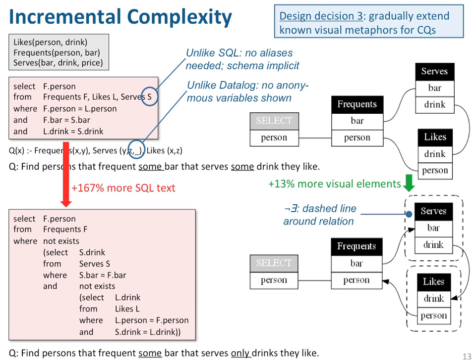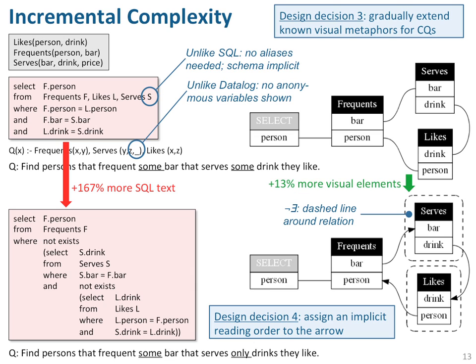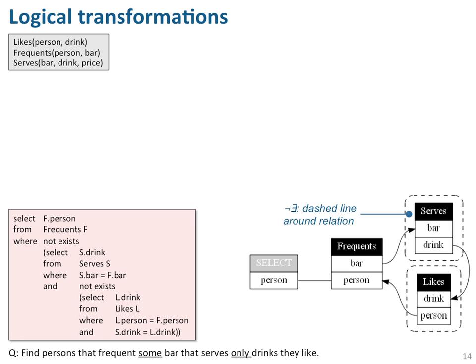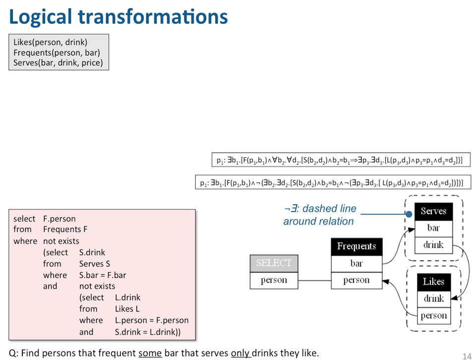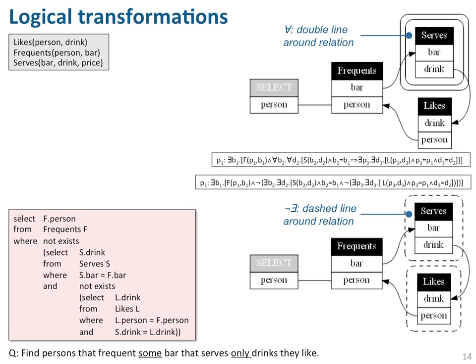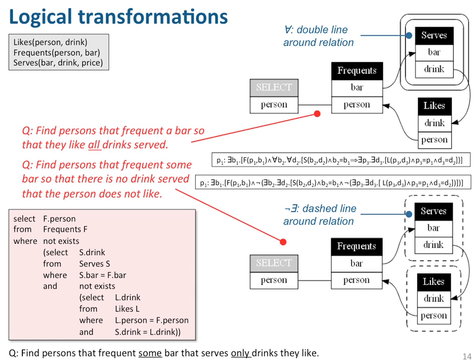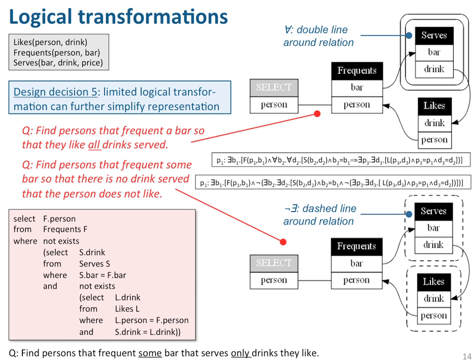Our third design decision is that we gradually extend the known visual metaphors for conjunctive queries and database schemas to more complex queries. The fourth is that we also assign an implicit reading order to the arrows. Given we have a logical representation of the query, we can further manipulate it — for example, change a double negation to a positive statement. Here the double line means 'logical all.' Select all persons that frequent some bar so that all drinks served by this bar are liked by this person. If we only keep in mind that a double line represents 'all' and a dashed line 'not,' these representations are arguably quicker to read and easier to memorize than the original SQL. Our design decision five is that we perform limited logical transformations that can further simplify the representation.